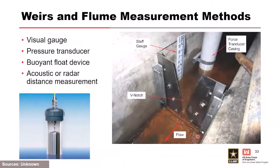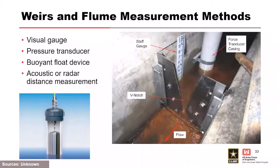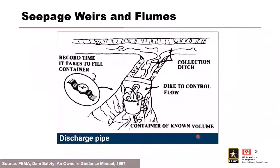Automation is considered for projects with a lot of risk, where a failure mode could progress rapidly, or for high-risk projects where all instruments are automated. There are also point float devices and radar measurements available. The most basic method of measuring seepage through a weir or flume is the bucket and stopwatch method: fill a bucket of known quantity — say, a five-gallon bucket — and time how long it takes.